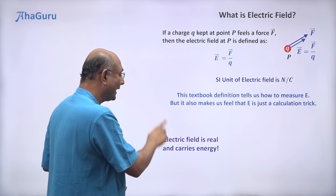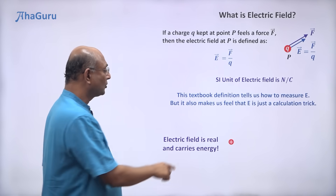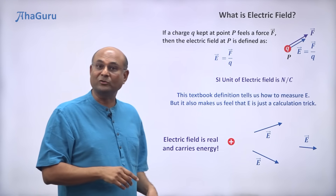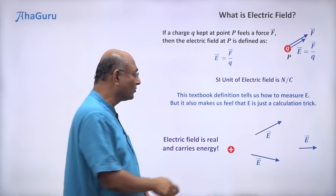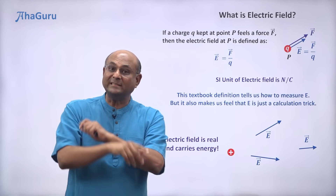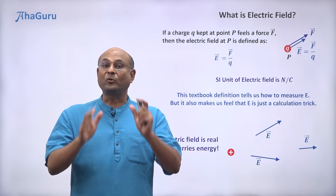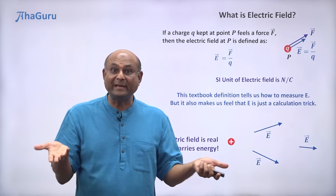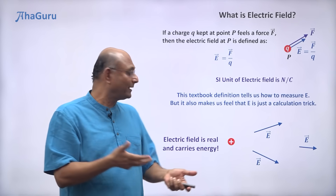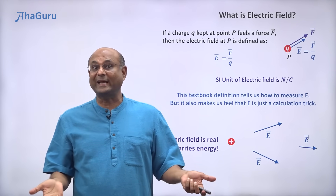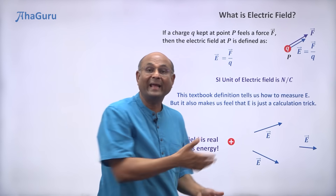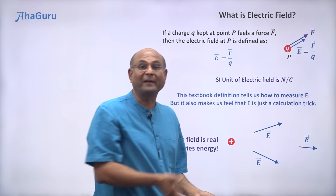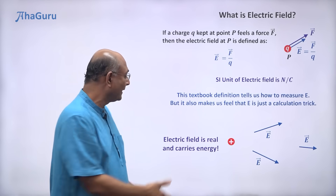Electric field vectors are real and they carry energy. If I take a charge and shake it around, the electric field is changing. Changing electric fields produce electromagnetic waves. What are electromagnetic waves? Light is an example. Is light real? Of course it's real. Does light carry energy? Of course it carries energy. But what is light? Light is electric field vectors that are changing. So obviously, electric field vectors in space are real and they carry energy.